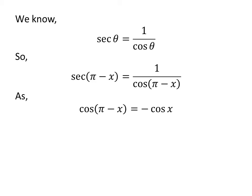We also know the trigonometry identity cosine of pi minus x is equal to minus cosine of x.